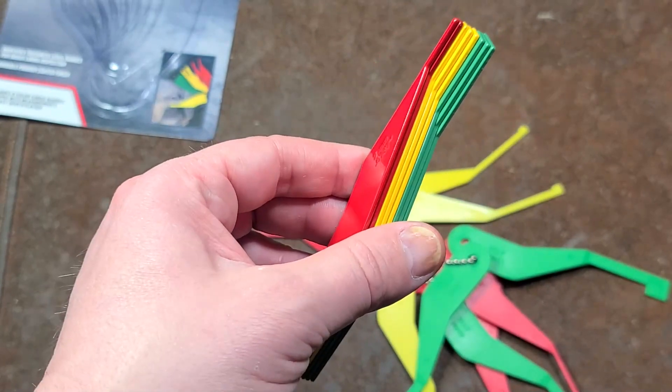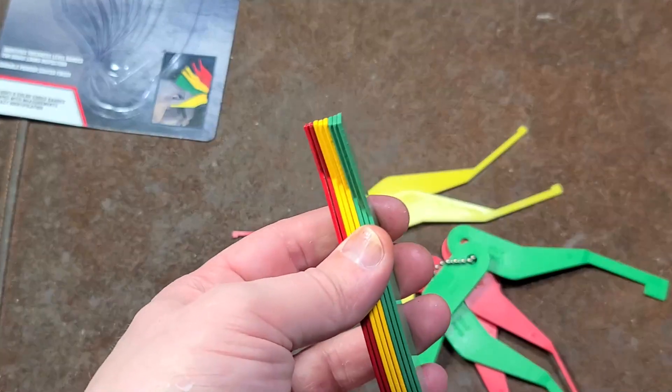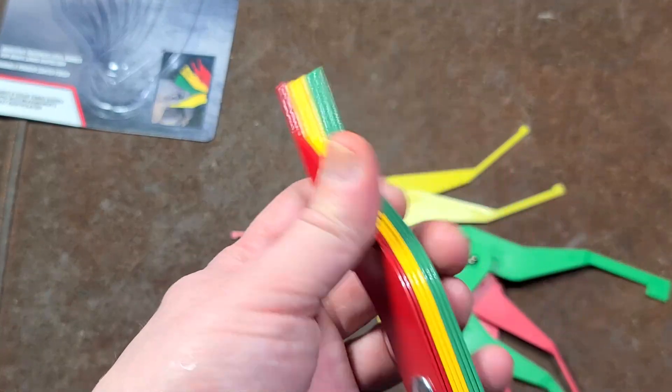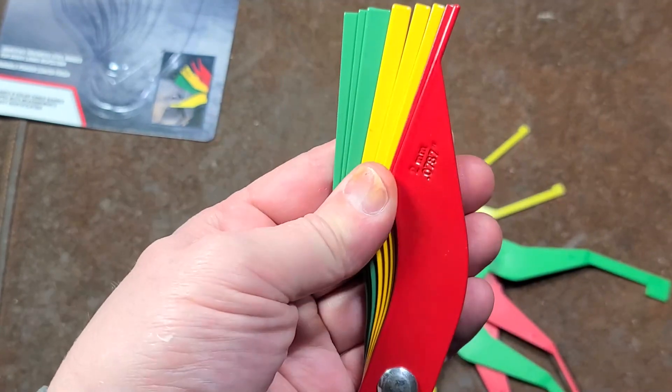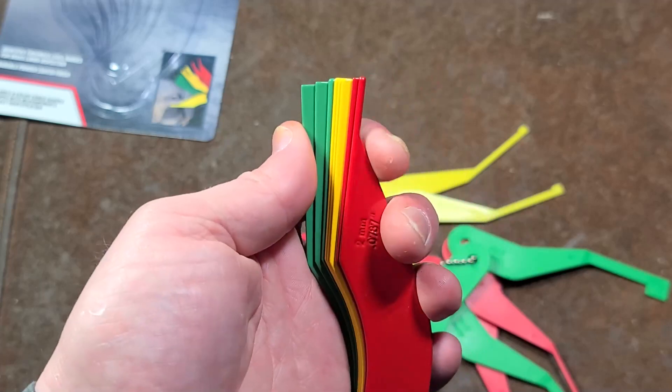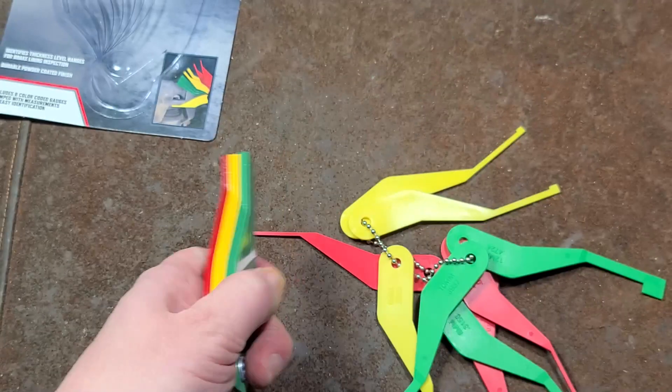You have to do it from the front because the back of the disc rotor has a dust protection cover around it and you won't be able to get these in at all. So you have to do it through the front side of the wheel. The big issue is, unless you have alloys with huge gaps that you can reach your hands into, you're going to have to remove the wheel from the vehicle to be able to use these gauges.